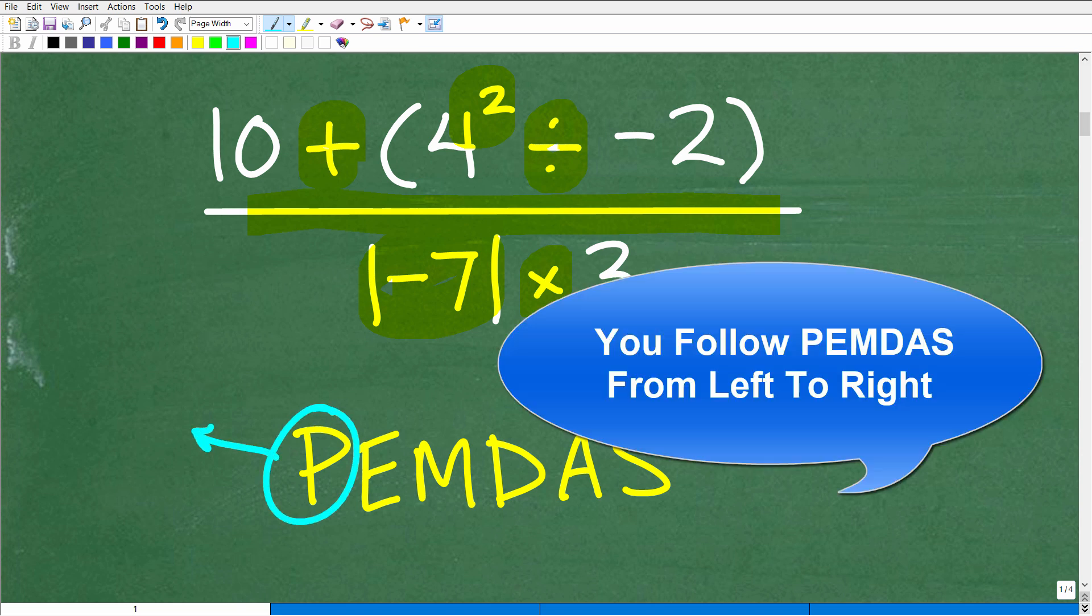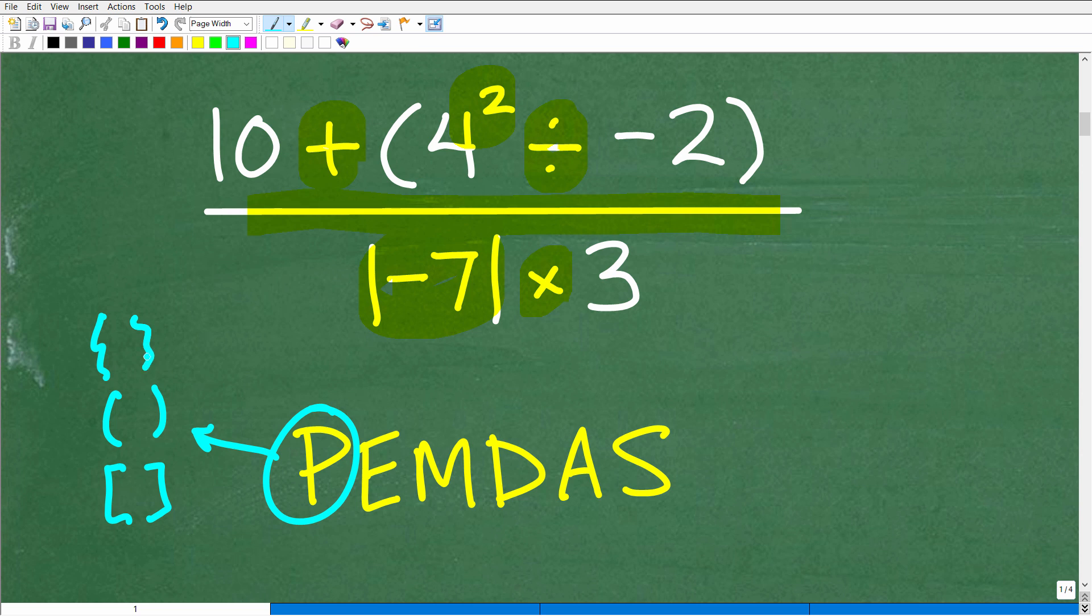So the P stands for parentheses. So wherever we see parentheses or grouping symbols like brackets or these little squiggly things, we're going to put our attention there first. So we're going to handle anything inside parentheses, innermost parentheses first. So in other words, if I had a problem with parentheses here and then there was brackets here and then there was other parentheses there, and that's not uncommon in math, you would start from the innermost and kind of work your way out.